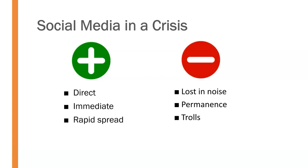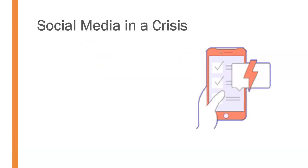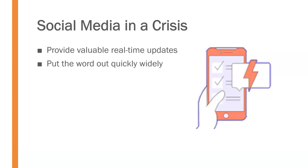Social media can have a very positive effect and be used effectively in a crisis, but it can also be a challenge, and we need to be aware of that. When using social media in a crisis, there are guidelines to keep in mind. First, use it to provide real-time updates — we have that immediacy, so we want to communicate with people in real time and not keep them waiting, being as transparent as possible. We also want to put the word out quickly and widely. Whatever message we want to share, assume it's going to the entire world and hopefully quickly — social media is the go-to for reaching a mass audience fast.